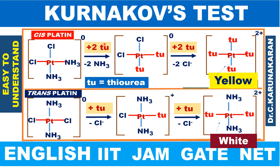Good morning. Let us study today Kurnakov's test or Kurnakov's reaction. There are two isomers, cisplatin and transplatin. Cis and trans isomers are distinguished by using Kurnakov's test. This test is based on trans effect.